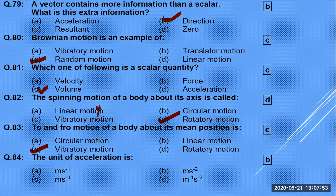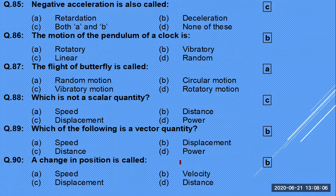The to-and-fro motion of a body about its mean position is vibratory motion — a body repeating its motion in equal intervals of time. The unit of acceleration is meter per second squared. Negative acceleration is called retardation.